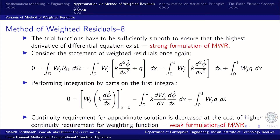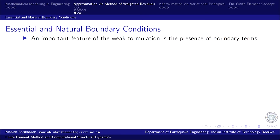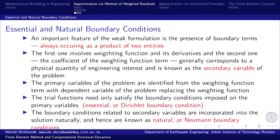The weighting function term can involve either the weighting function itself or a derivative of it, depending on the original order of the differential equation. In this particular case of a second-order differential equation, the boundary term in the weak formulation involves only the weighting function without any derivative. The coefficient of the weighting function term generally corresponds to a physical quantity of engineering interest and is referred to as the secondary variable of the problem.